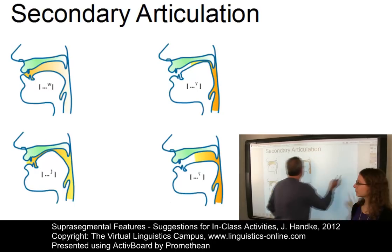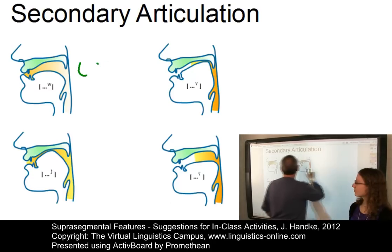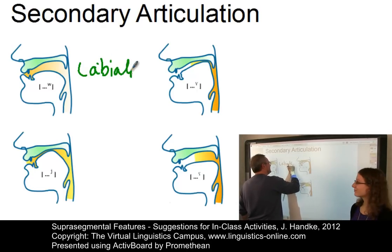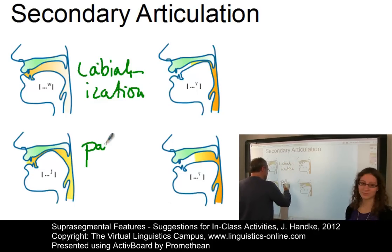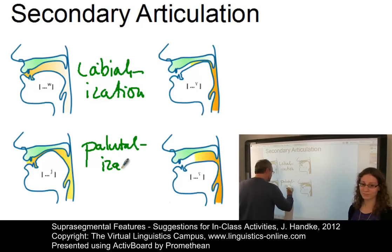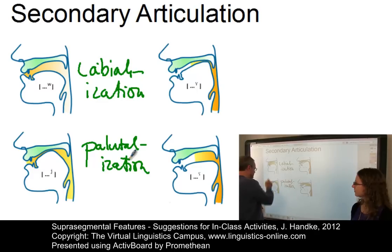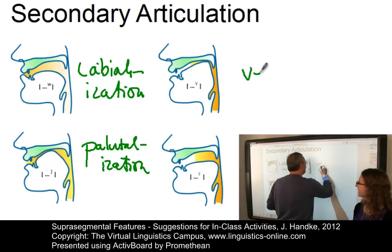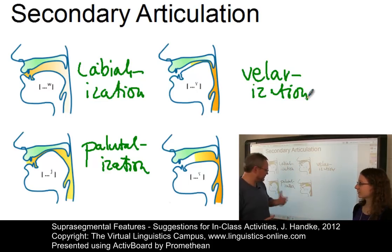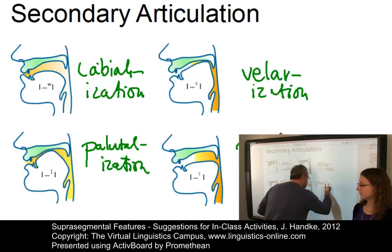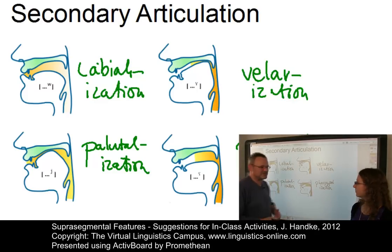The first type is labialization — some sort of lip rounding. Then we have palatalization, where the tongue approaches the palate. You can find the phonetic diacritic on the diagrams. Then we have velarization, where your tongue is very high in the velar region. And finally pharyngealization, where the tongue is very much in the throat. The naming is simple: take the place of articulation and add -ization.